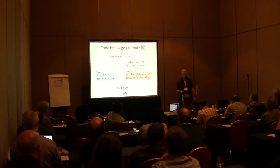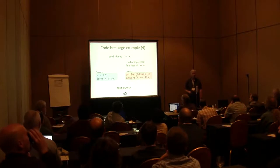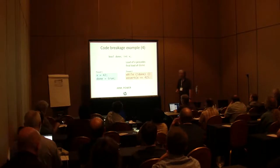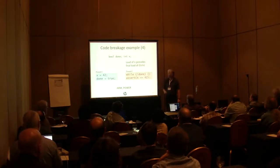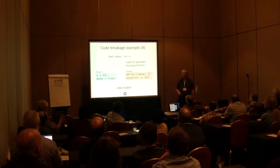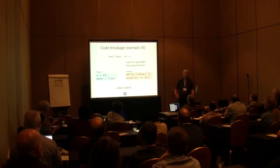There's yet another way this can break, which has to do with hardware reordering. On the reader side, the final load of "done" that actually sees "done" set and the load of X below it can be reordered by the hardware - in which case you might see "done" set, but X not equal to 42.